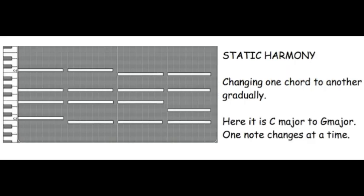Static harmony is where you change one chord very gradually to get to a new chord. In this example, we're going to hear C major going to G major by changing one note at a time.